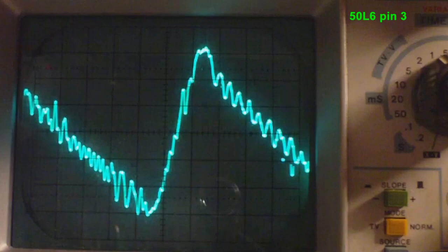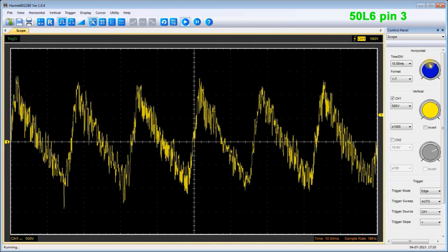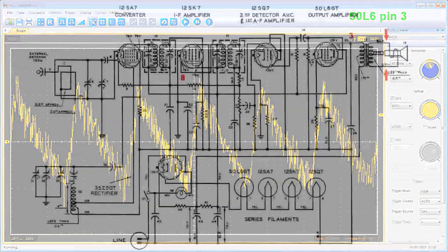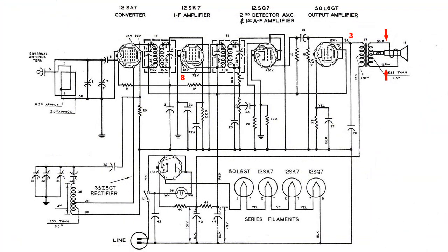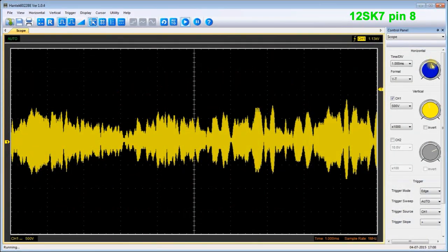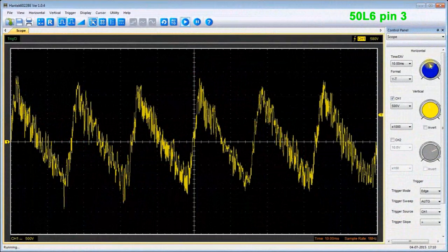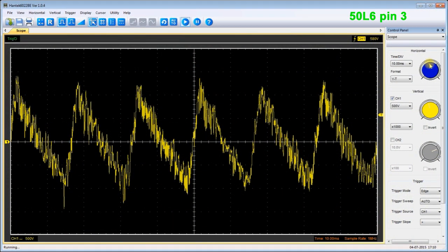This is pin 3 of the 50L6 and it's clear to see that the electrolytic capacitors, the filter capacitors, need to be replaced. There are links to these JPEG pictures of the analog and digital oscilloscope results so you can do a closer comparison on your own computer.